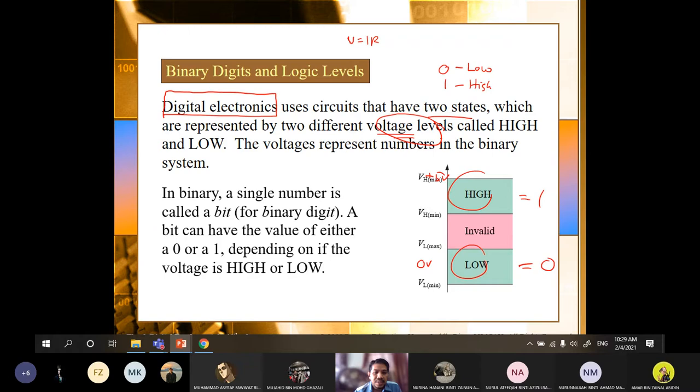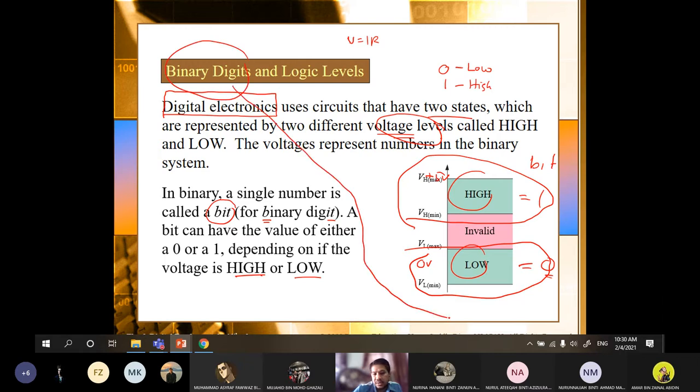So in binary, a single number is called bit. So bit is short for binary digit. So a bit can have a value of 0 or 1 depending on if the voltage is high or the voltage is low. So if we consider voltage is low or 0, 0 volt will represent as 0, 0 bit. So a bit here is bit 1 and bit 0, voltage high and voltage low. So this is how we represent binary digits and also logic level. So binary digits is 0 and 1 here. Logic level here, it depends on the voltage, voltage high or voltage low.